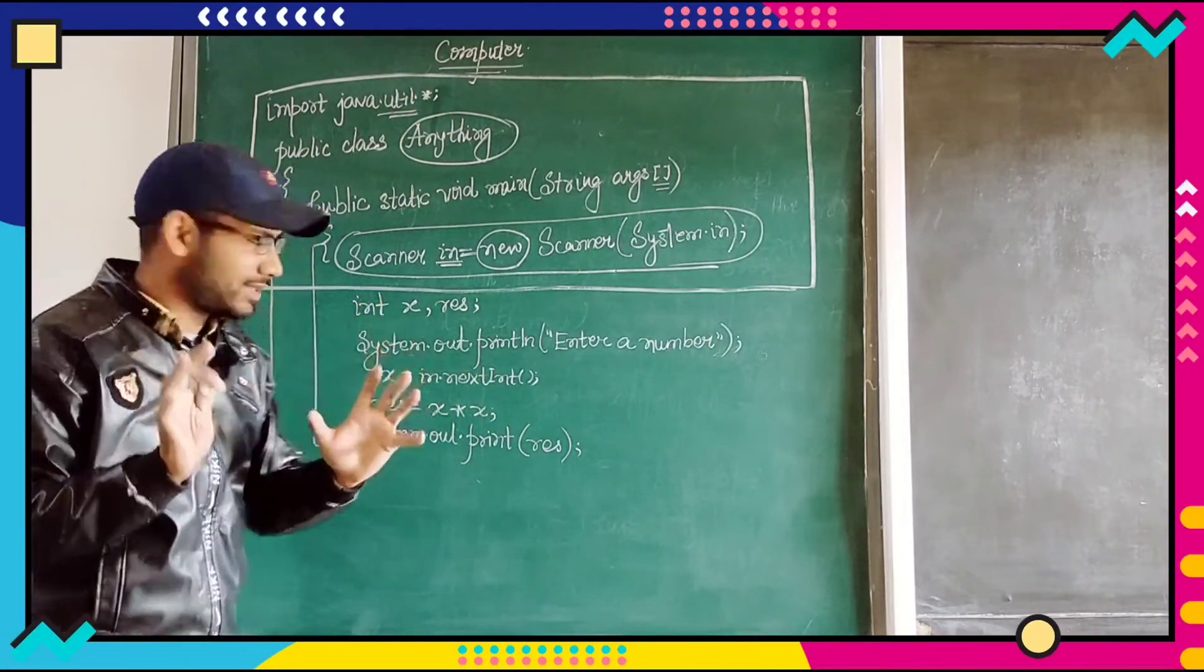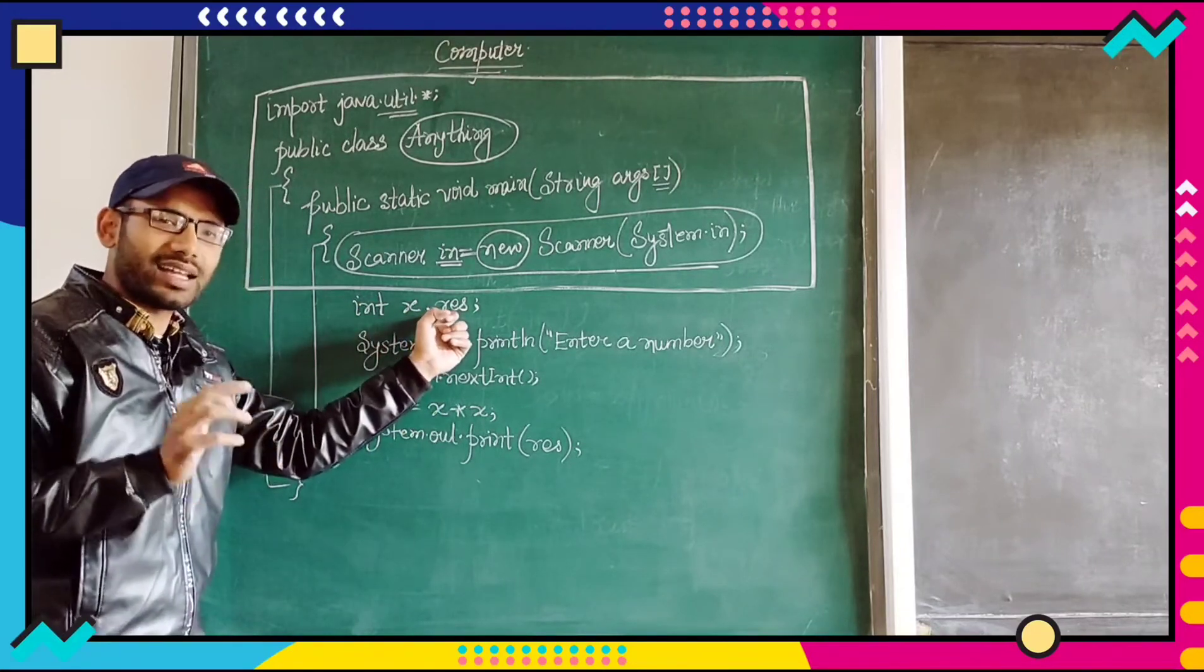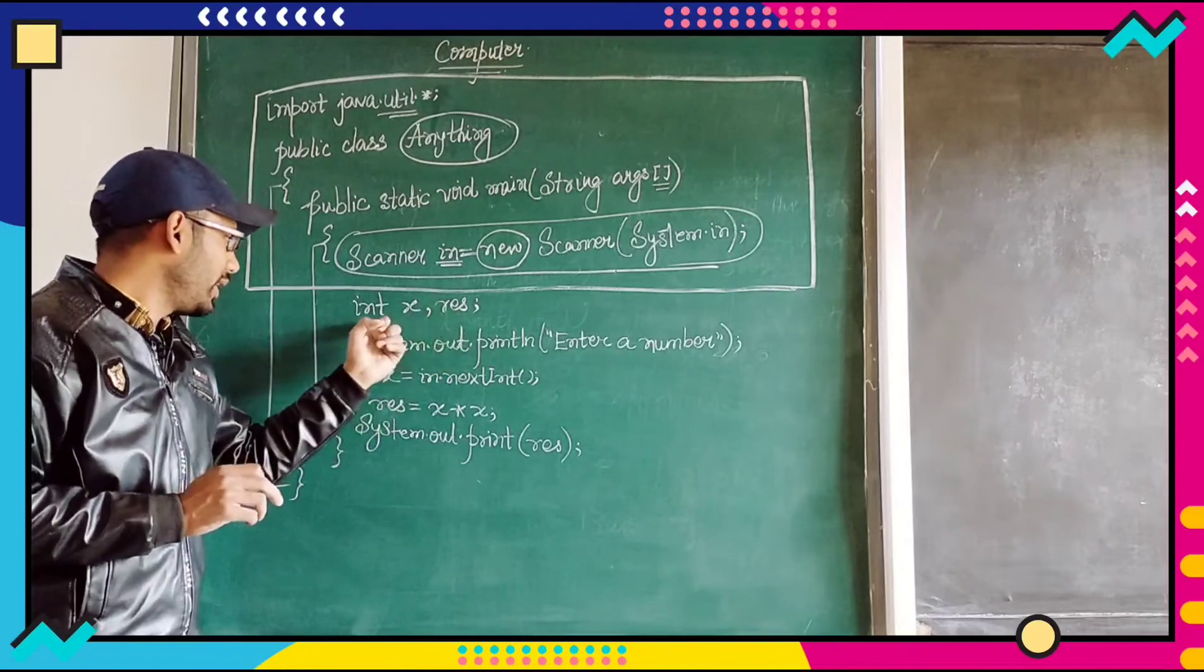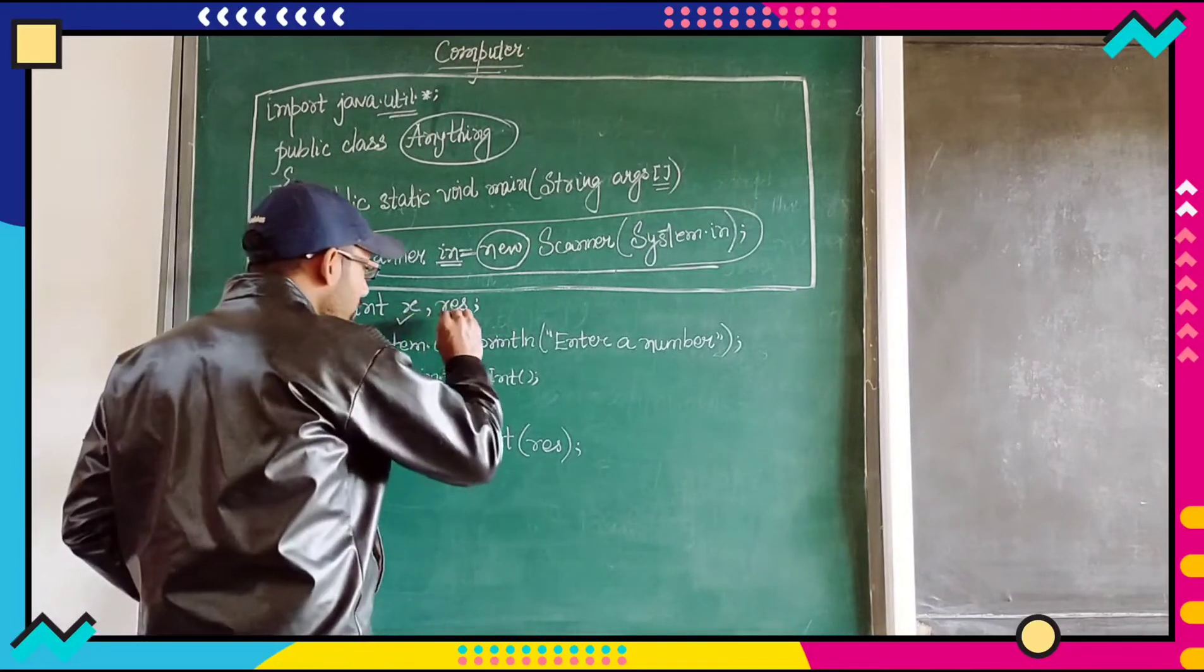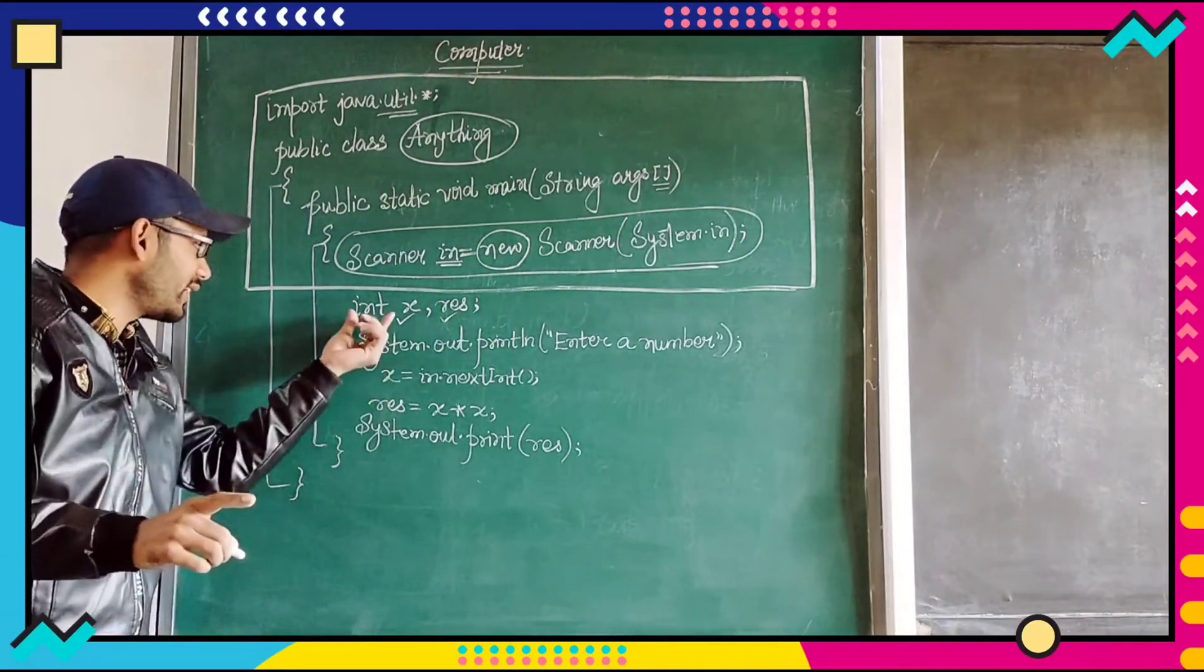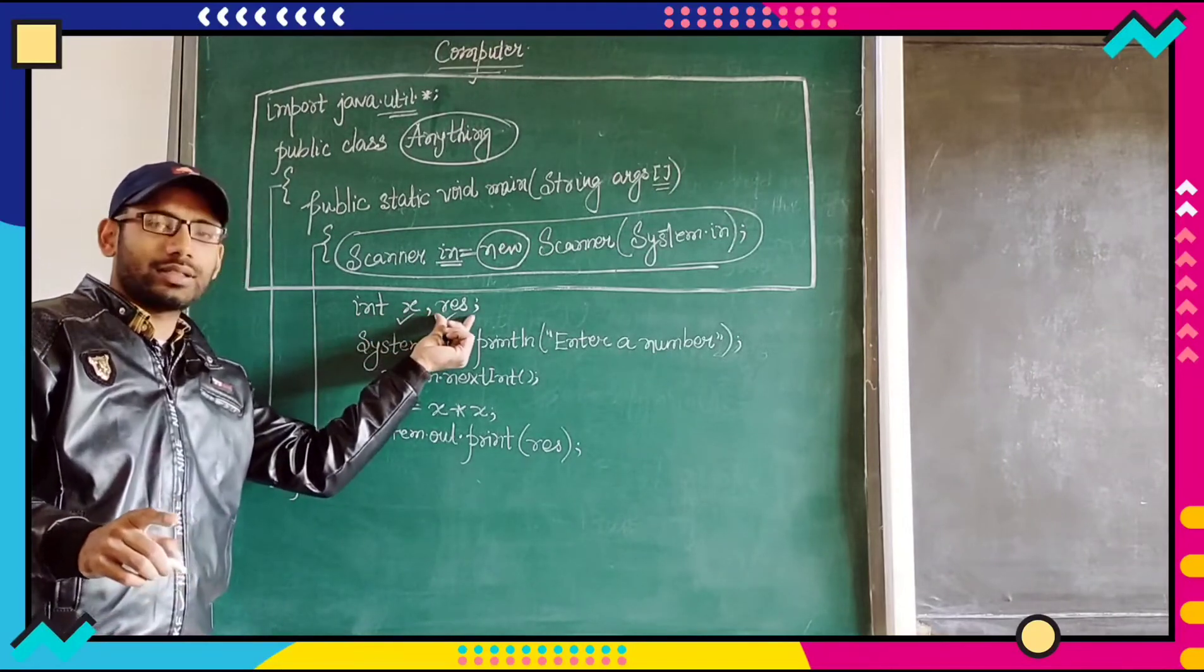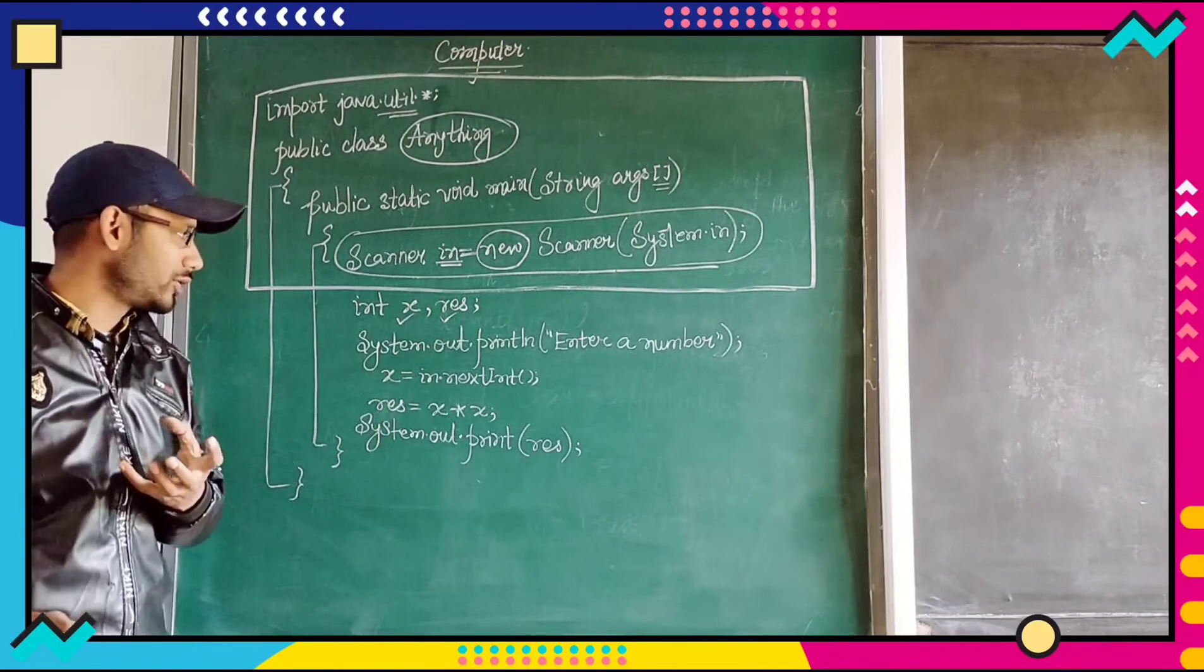Now the program starts. Int x comma res, result in short I have written res. These two are what? These two are variables and what type of variable data type is int. That means these two are containers which can contain what type of value? Integer.